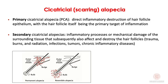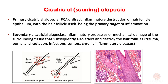Frontal fibrosing alopecia is classified in cicatricial or scarring alopecia, where we can have two types: primary, where the inflammation is directed to damage in the target of the inflammation, or secondary, where the inflammatory disease is due to a secondary event that induces the destruction of the bulb. In both cases, the inflammation is always at the site of the bulge, and its destruction induces a cicatricial alopecia.